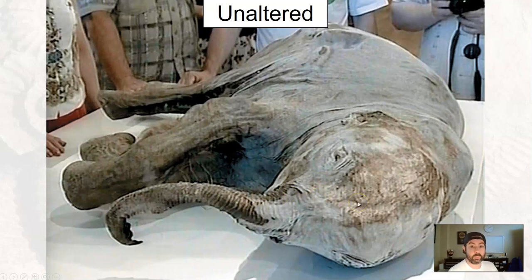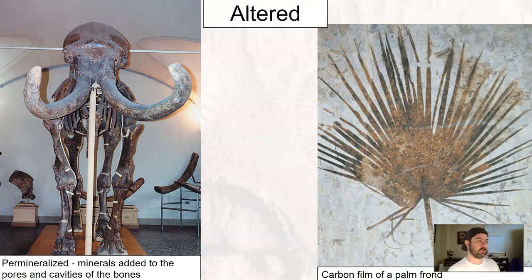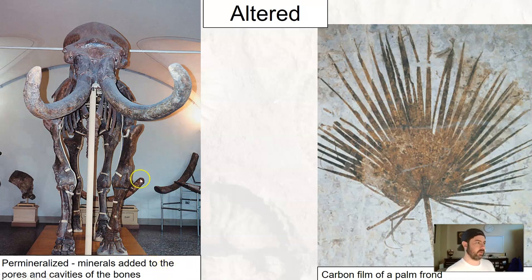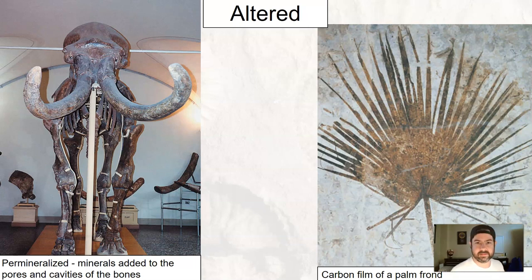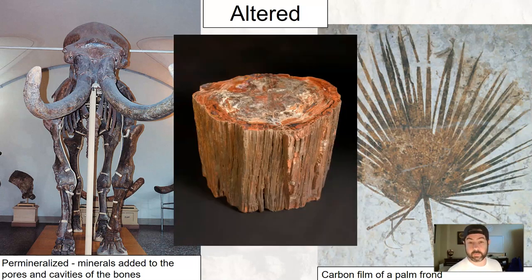Freezing does a good job too. This is an actual baby woolly mammoth taken out of the frozen permafrost in North Russia somewhat recently — in fact, a number of these things have been found. That is a body fossil. Then you get altered material — for instance, if you're ever looking at dinosaur bones, those aren't actual bone material anymore. These things have been permineralized where minerals have been added to the pores and cavities of the bones. They're more stone-like than bone-like. Carbon films also occur as organic material decays, especially softer material like plants or fish.